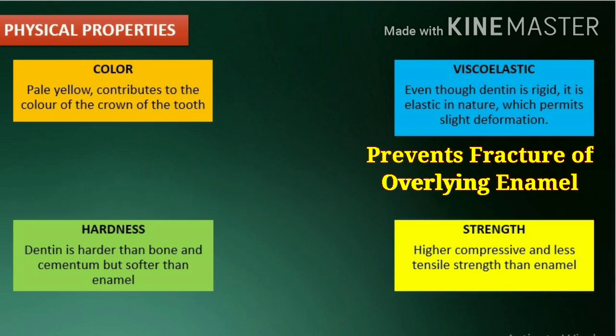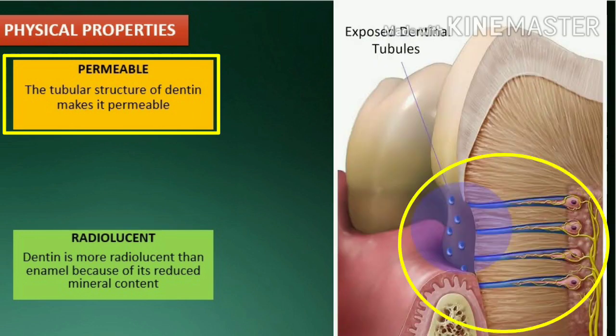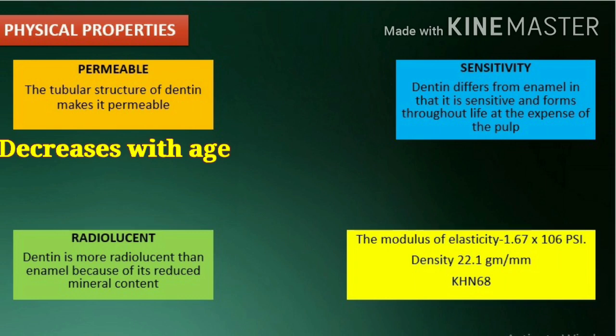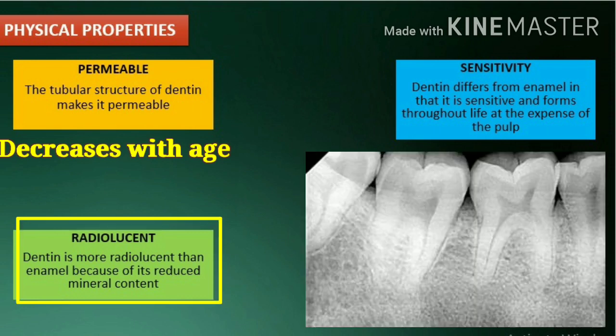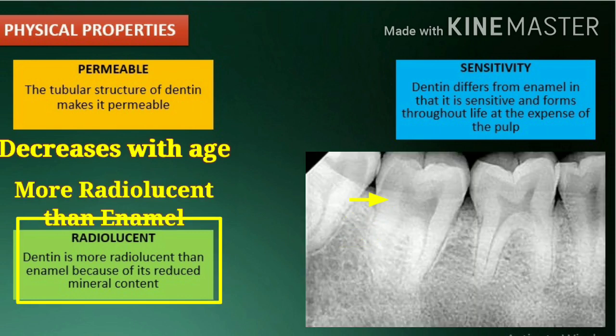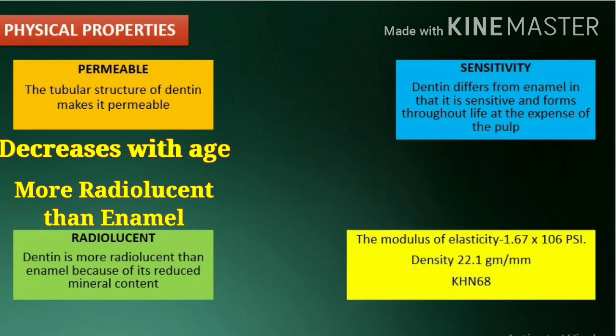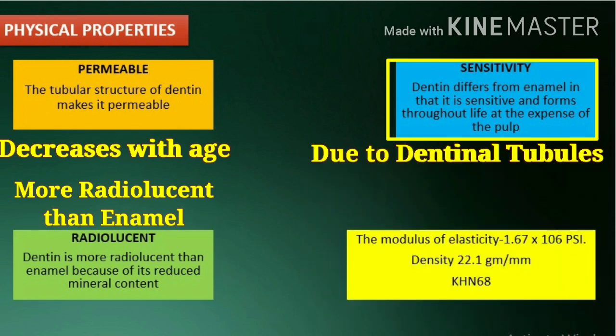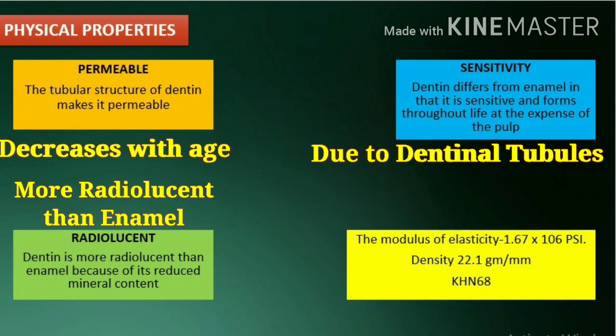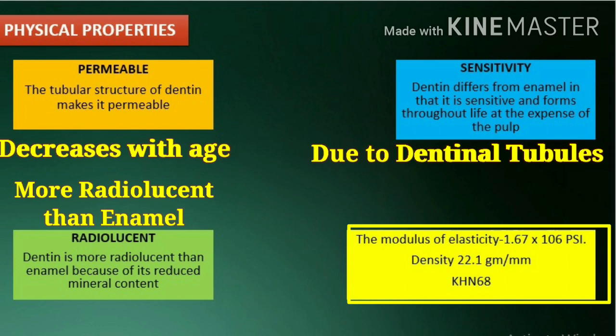The tubular structure of dentin makes it permeable. This permeability, however, decreases with increasing age. Dentin is more radiolucent than enamel because of its reduced mineral content. Dentin differs from enamel in that it is sensitive and forms throughout life at the expense of the pulp. The modulus of elasticity of dentin is 1.67 x 10⁶ psi.